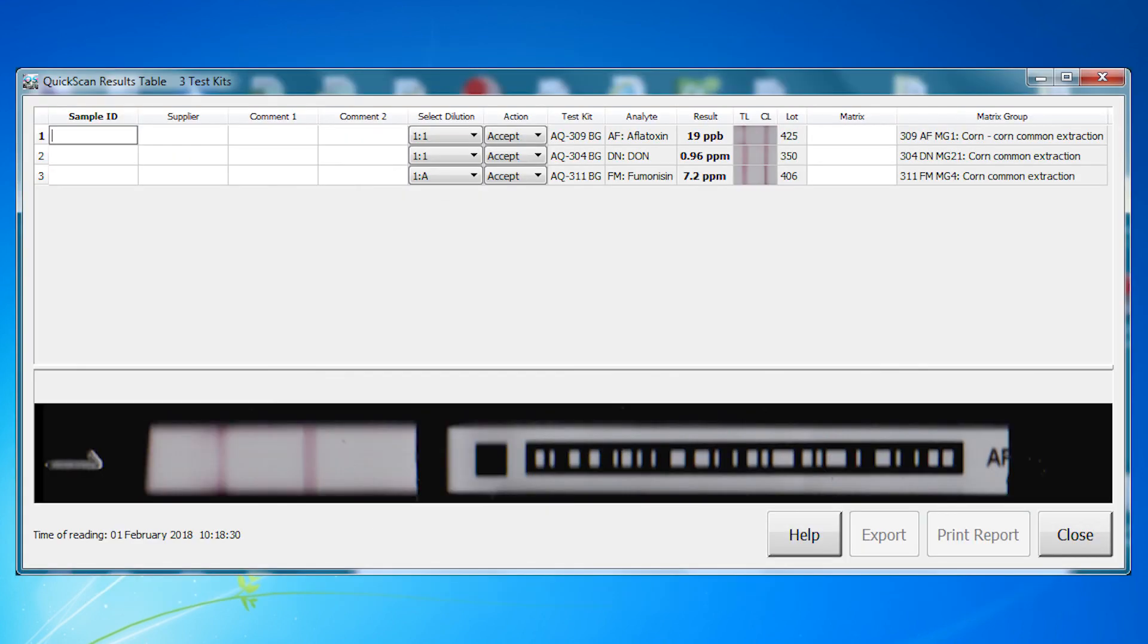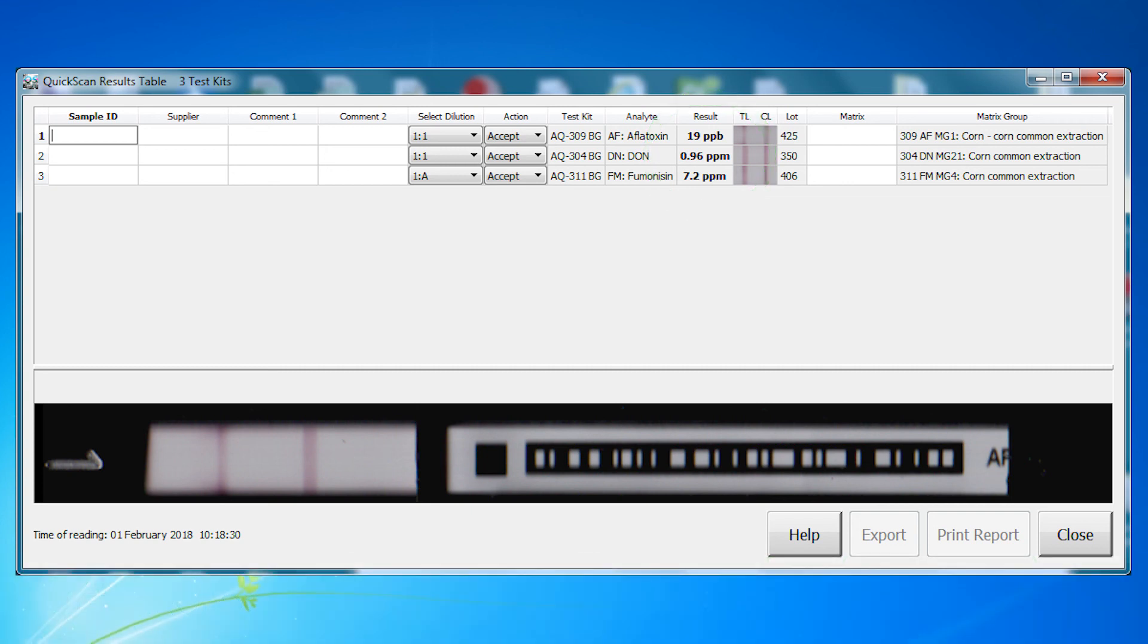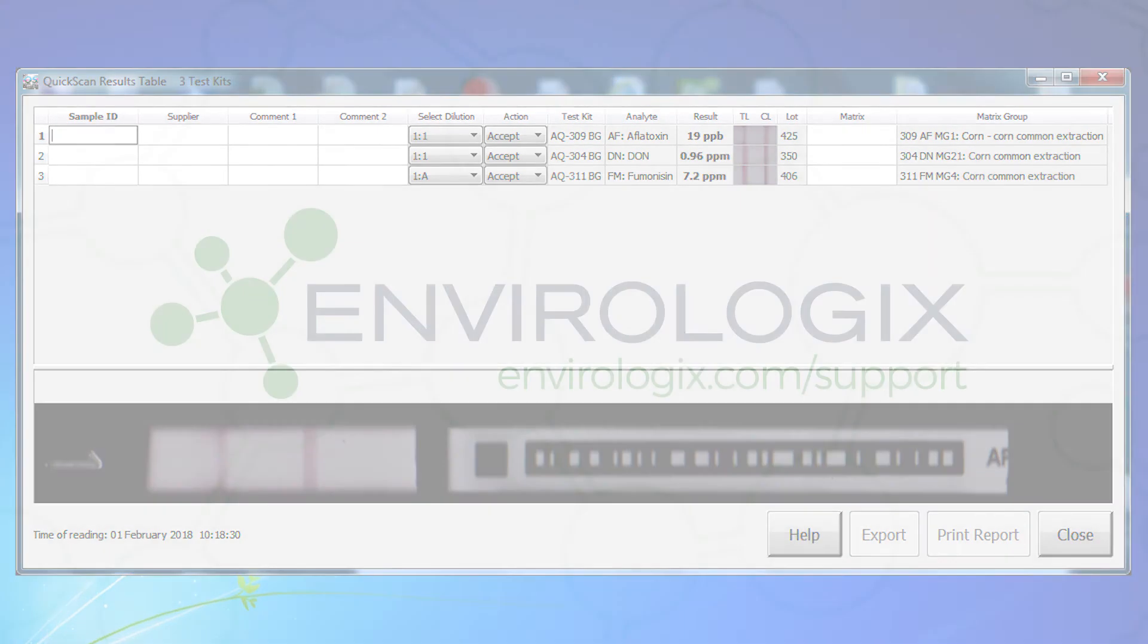Also, ensure that the dilution tab for Fumonisin is selected as 1A. If you obtain results outside the base range, further testing may be possible. Please refer to the common extraction product insert for additional testing options.